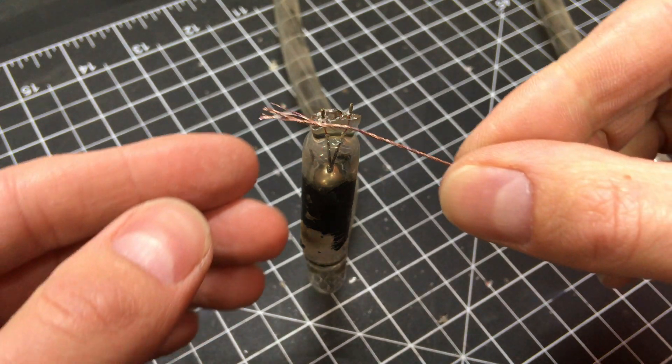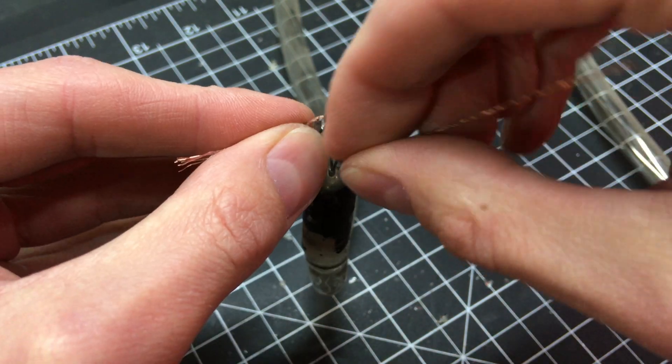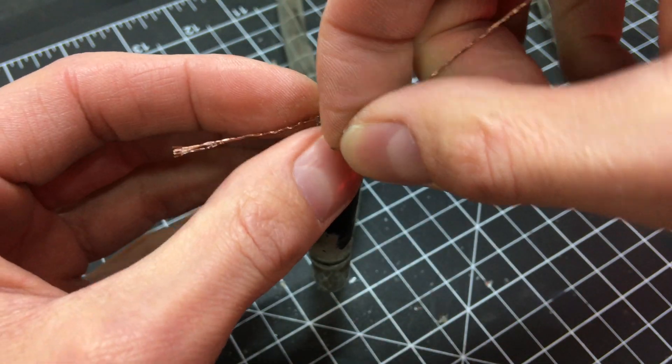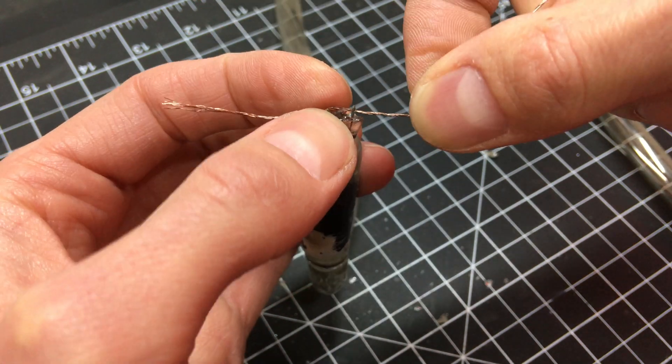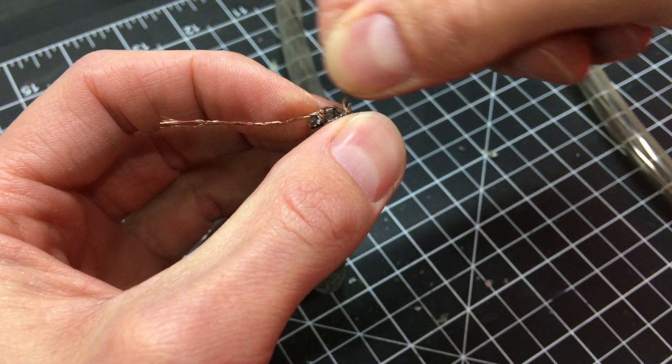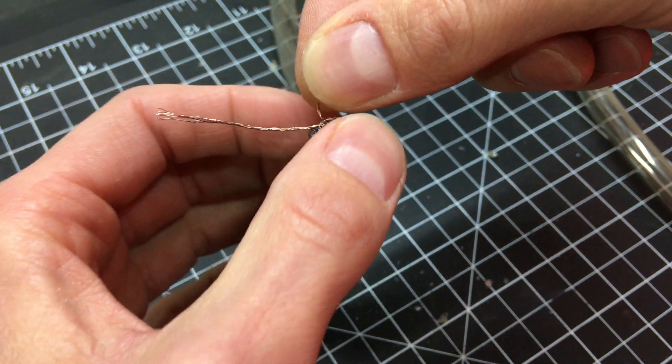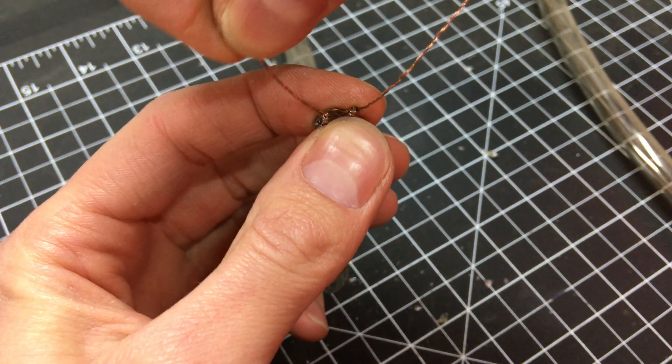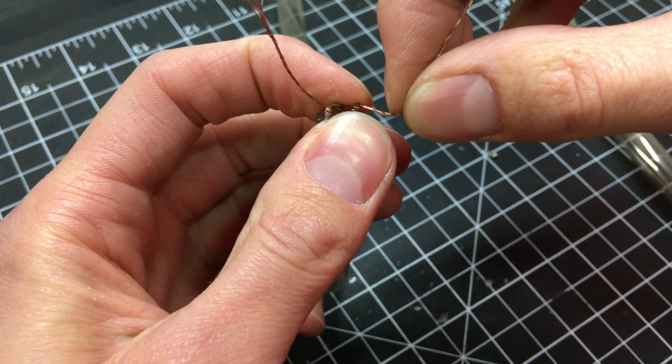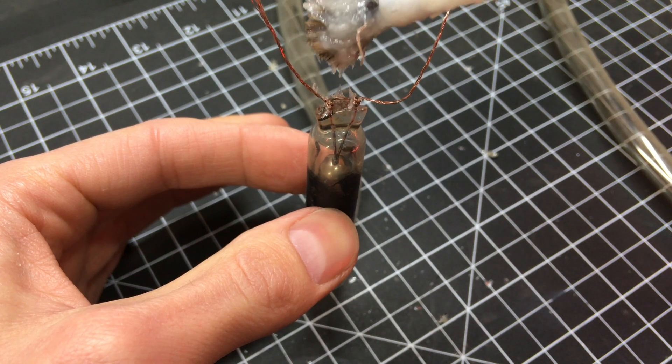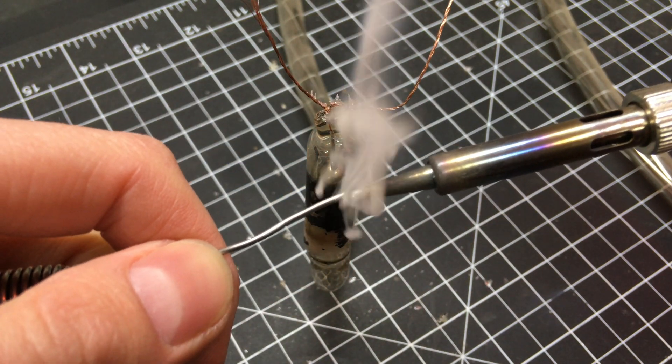Several small-gauge copper strands are wrapped around the electrode wires. A bit of flux is added, and the wires are soldered in place.